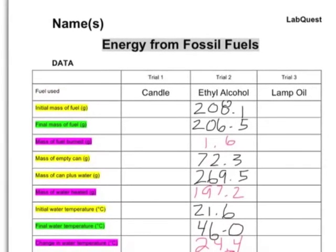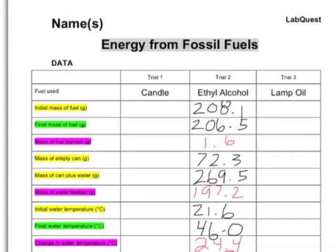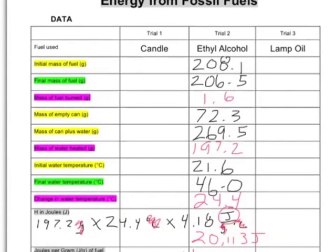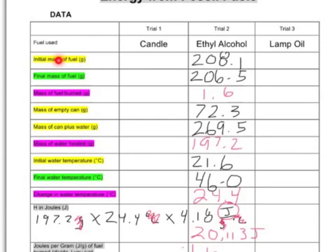The next thing you'll want to do is run this experiment for the candle, run all your numbers again, and then run it for the lamp oil. Make sure to get cold fresh water every time. Fill out all the values in the data table, and then you can compare these three fuels.